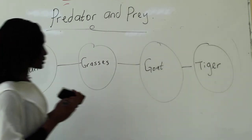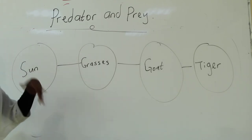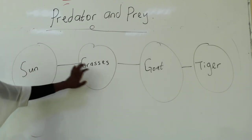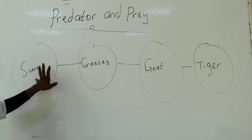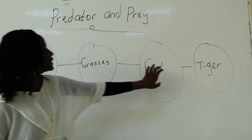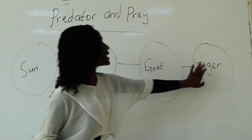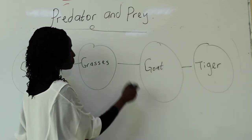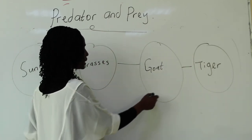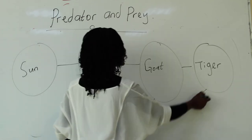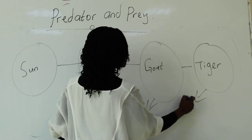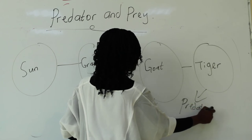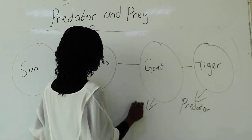Let's do another example. We have the sun — most food chains start with the sun. Grasses get energy from the sun. Goats get energy from the grasses. A tiger gets energy from the goat. So the tiger is the predator, and the goat is the prey.